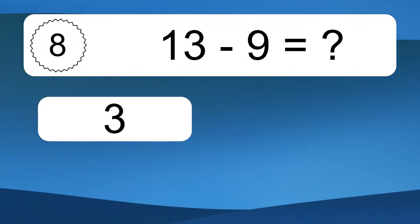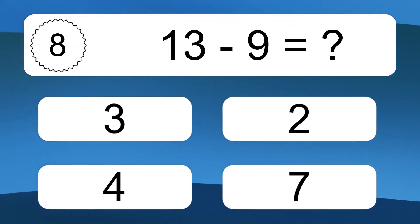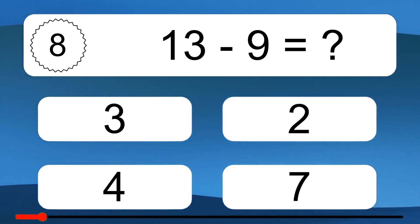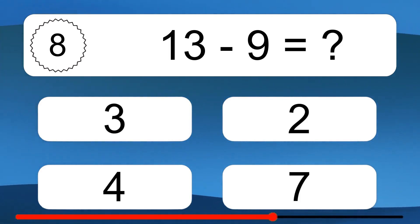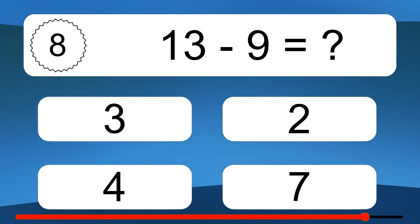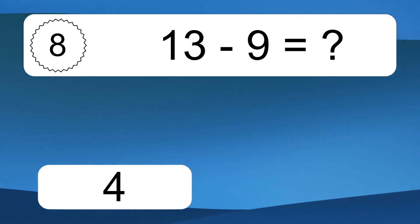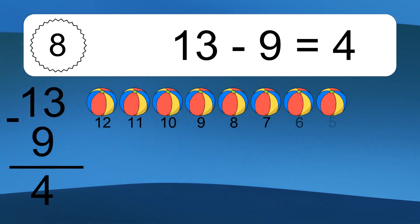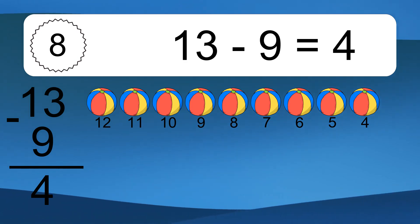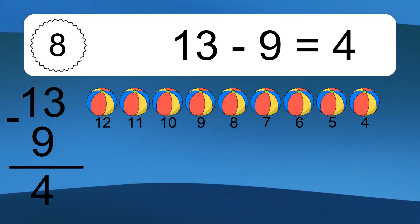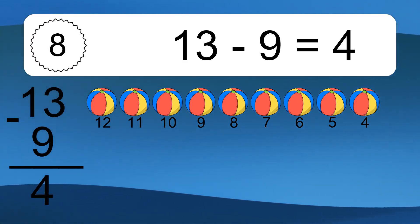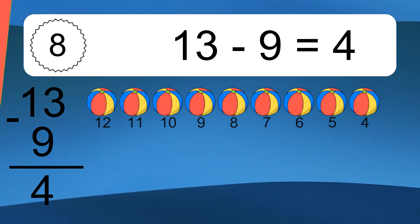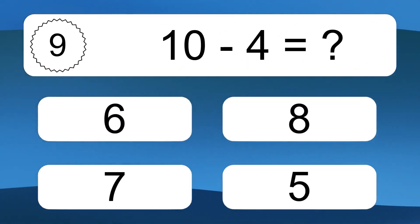13 minus 9 equals what? 13 minus 9 equals 4. Let's count it. 12, 11, 10, 9, 8, 7, 6, 5, 4.